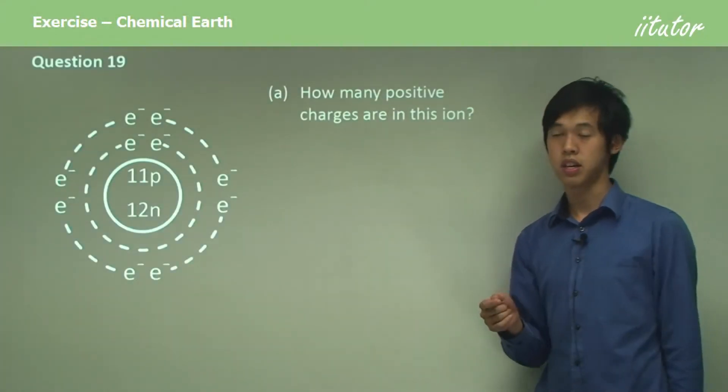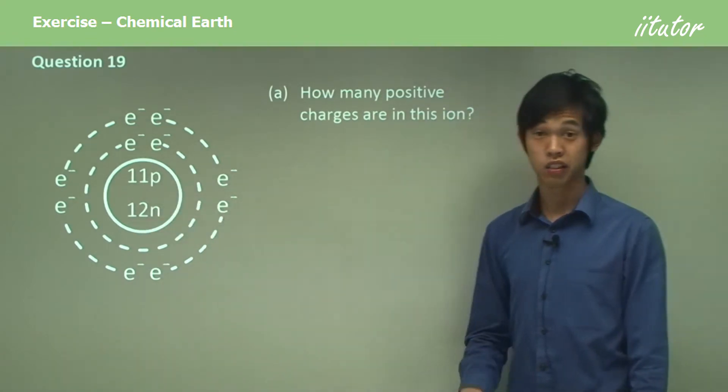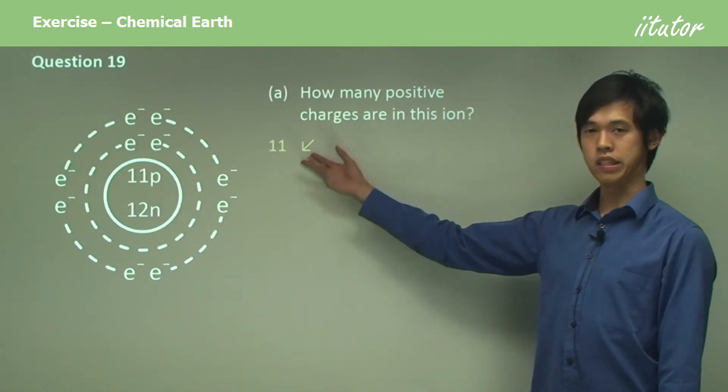How many positive charges are in this ion? Well, it's pretty clear there's 11, because there's 11 protons. So our answer's 11.